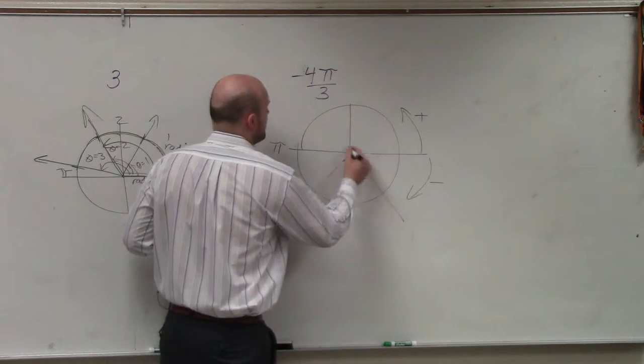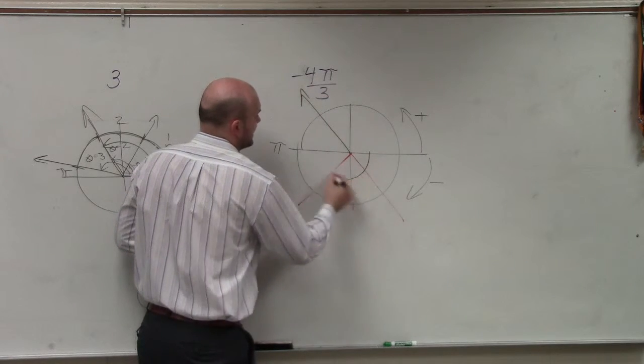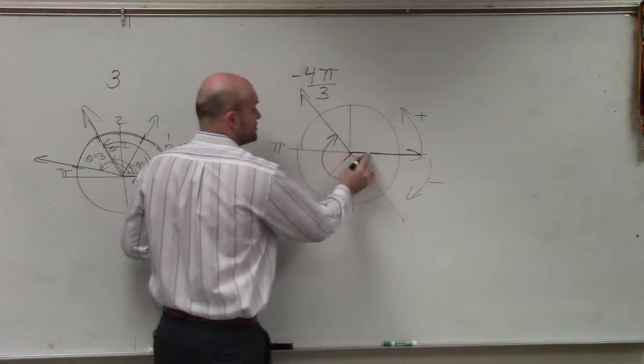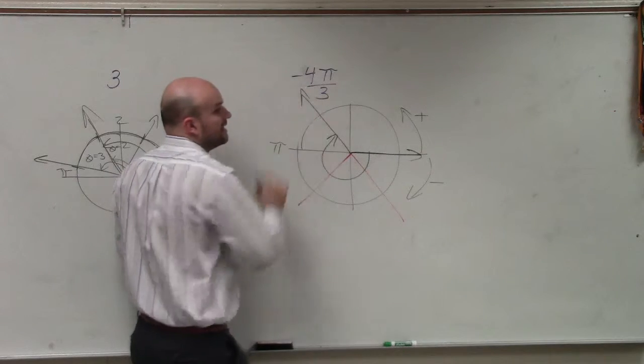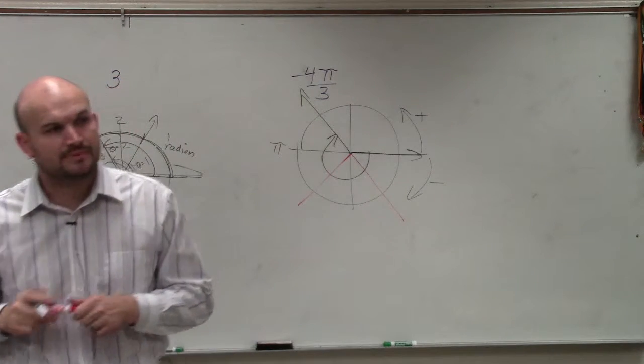So if I need to go over one more, this would be negative 4π over 3. Initial side to terminal side, negative 4π over 3. That's right.